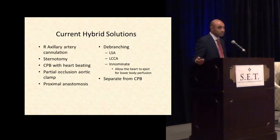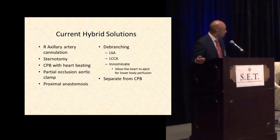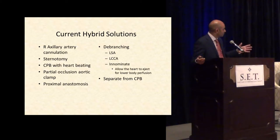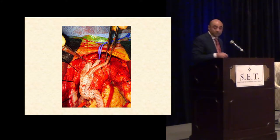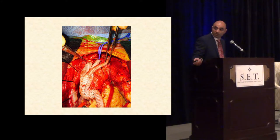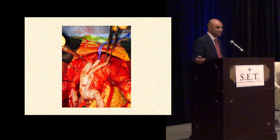We will typically cannulate the right axillary artery to provide cerebral perfusion while we're doing the case. It does require sternotomy to sew in the open graft for the debranch. The heart can remain beating while we're doing this, which is advantageous for perfusing both the brain and the distal body. We do the proximal anastomosis, debranch, and then separate from cardiopulmonary bypass and do the endovascular portion. Here's a case — you can see here the three branches that go to the great vessels: the innominate, the left carotid, and the left subclavian. Those are all usually accessible from the sternotomy site, and then the fourth limb is going to be used to deliver the endograft. You have to be careful that you don't deliver the endograft too proximally and cover the anastomosis that you just created, so we typically put some metal clips to mark where that anastomosis is.